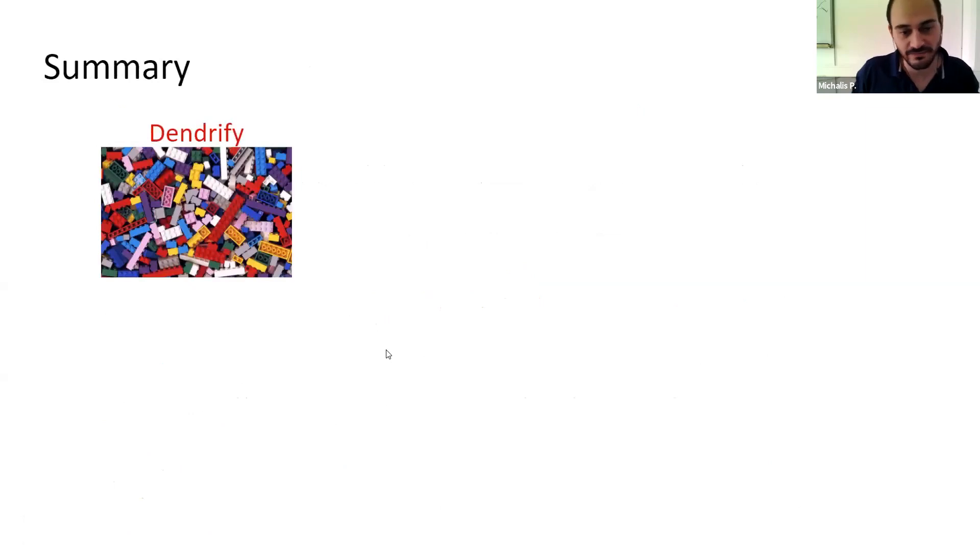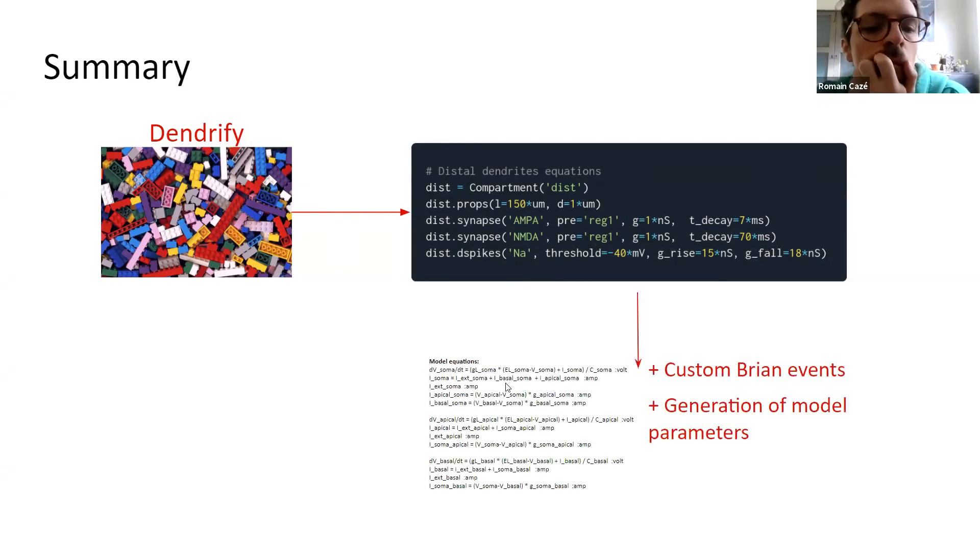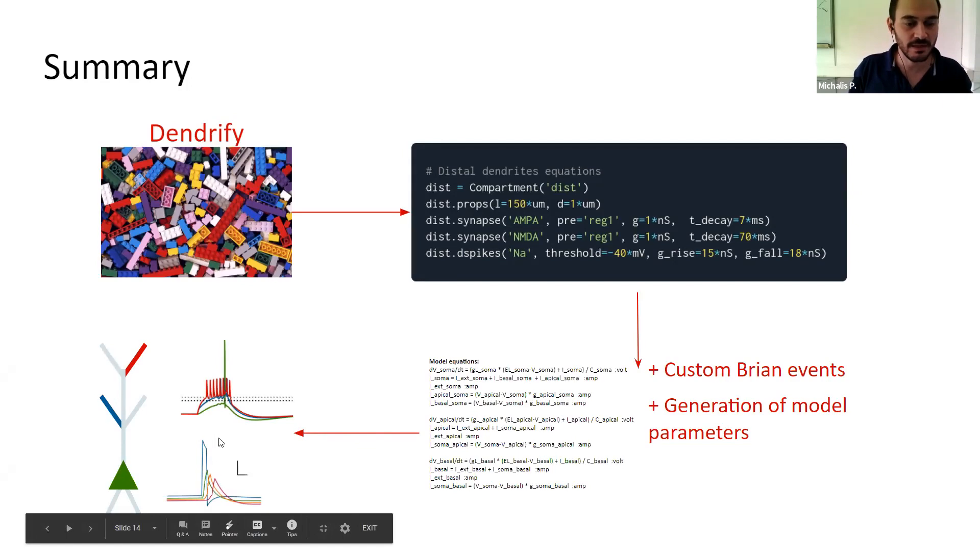And in summary, what is Dendrify? Dendrify is like a toolbox. It has some Lego style code where the basics of the code is a compartment object. In each compartment, like little Legos, you can add extra properties, you can add synapses, you can activate dendritic mechanisms. So there's no need to know hardcore computational neuroscience or programming. When the complexity increases, of course, you have more code, but I think it's Lego style and scalable. And such piece of code automatically creates all the equations for you, plus some custom Brian events, plus some model parameters. And eventually, this code results in some realistic, as possible, actually, simplified models that have active dendrites. The reason that we need them is that when you want to have spiking networks, you can't have super detail. With just a few compartments, you may lose some biological realism, but it's far better than the point neurons used traditionally.